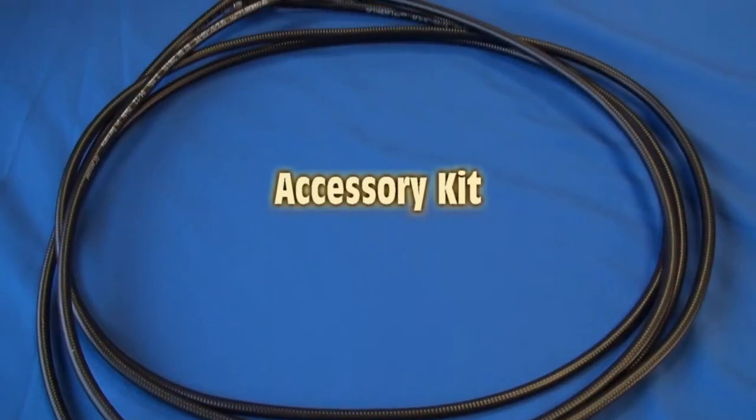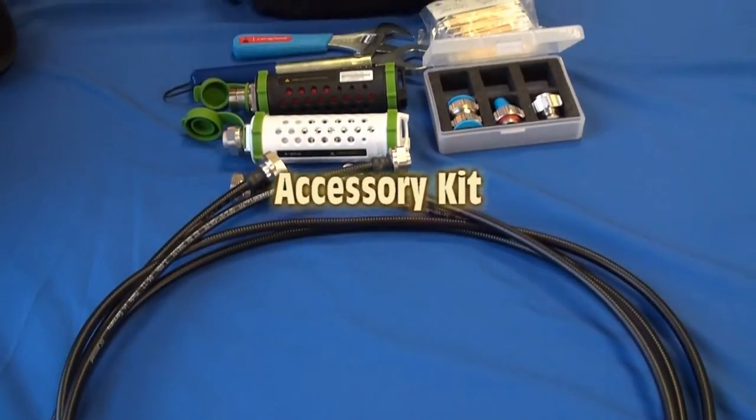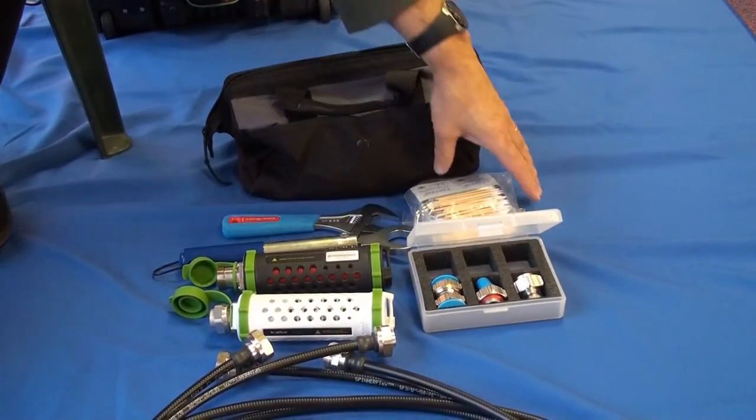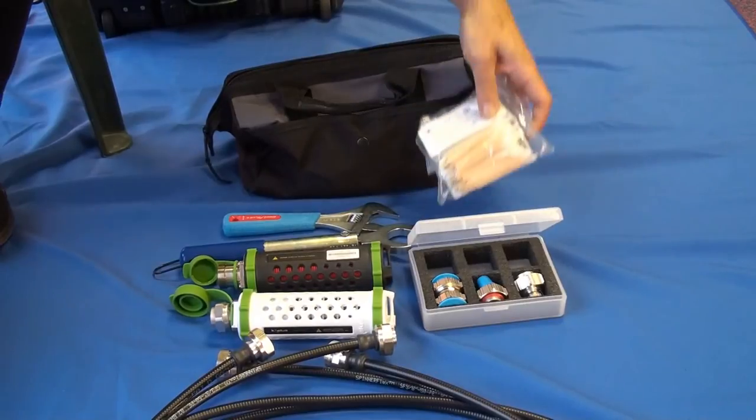The accessory kit contains all the components you need to start making good PIM measurements. In the bag you'll find a cleaning kit, which is very important.